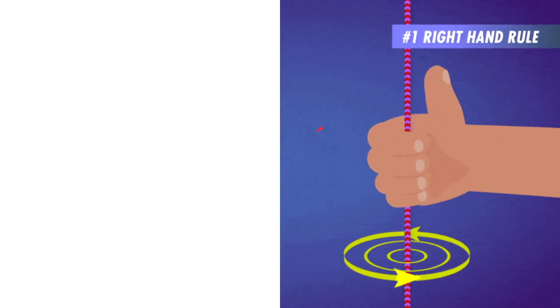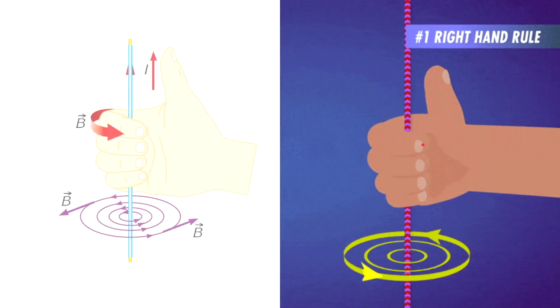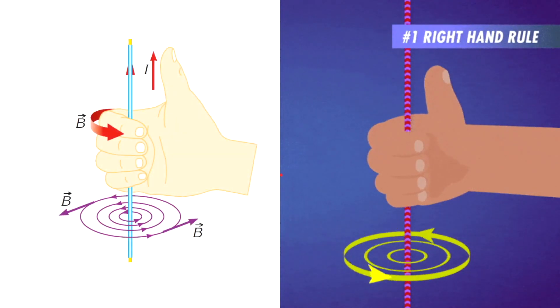Just take your right hand and point your thumb in the direction of electric current. Now, curl your fingers. The direction your fingers are curling is the way the magnetic field lines are pointing. And likewise, if you know the direction of the magnetic field, you can use the rule to figure out the direction of the current in the wire.